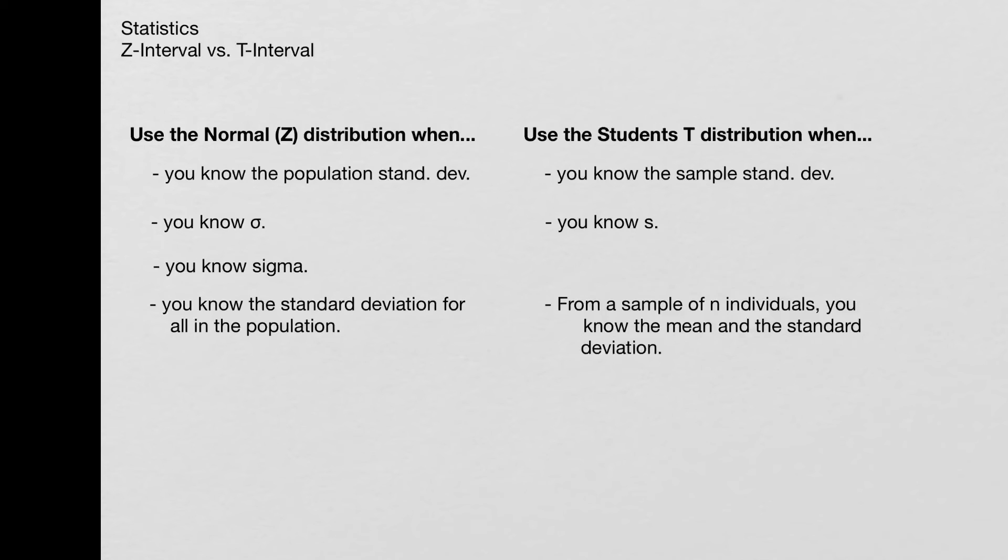It's not a guarantee, but it's the better way to go of the two choices. And then of course, if it's a confidence interval for a proportion, then you're going to use one prop Z interval.